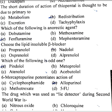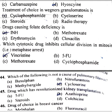The drug which was used as a lie detector during the Second World War is hyoscine. Treatment of choice in Wegener's granulomatosis is cyclophosphamide. Drug causing folate deficiency is isoniazid. Which cytotoxic drug inhibits cellular division at mitosis in metaphase arrest? Vincristine.